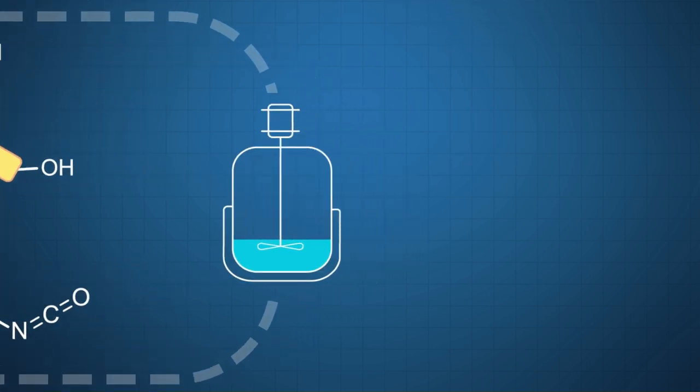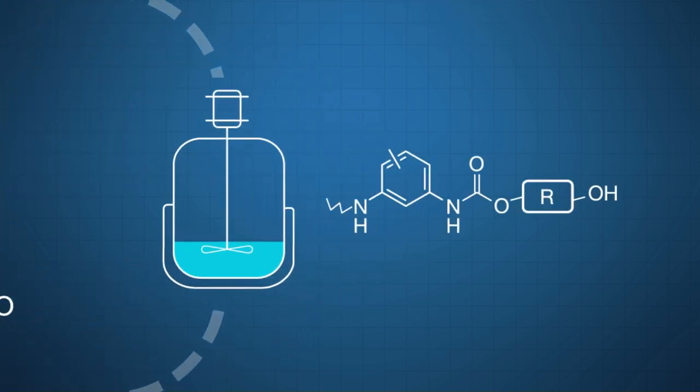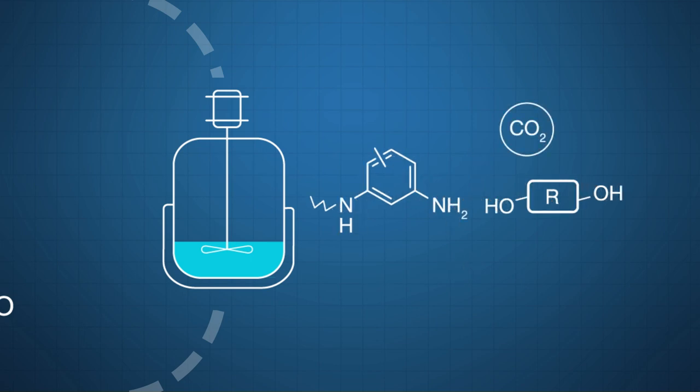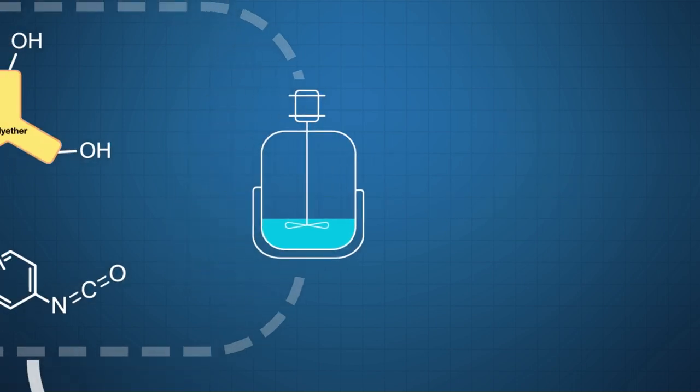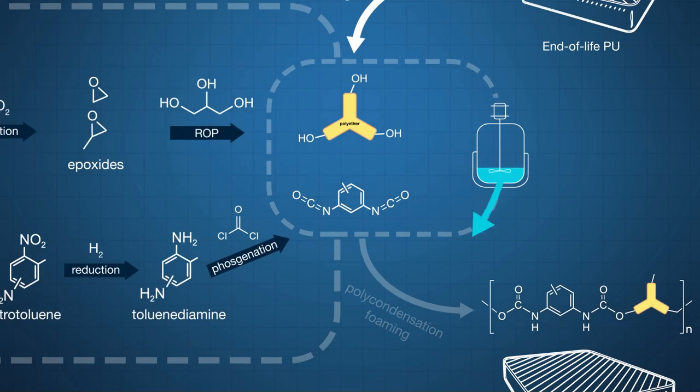The carbamate reaction products in the lower phase are hydrolyzed to toluene diamines in the presence of a catalyst at 200 degrees Celsius. The toluene diamines can be separated by distillation and subsequently phosgenated to toluene diisocyanate.